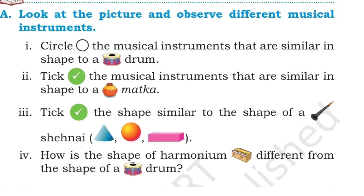Third one: take the shape similar to the shape of a chanai. We have a sphere, a cuboid and a cone shape. Let's check the chanai — just check the end of the chanai. It's looking like a cone shape. So the similar shape is cone.